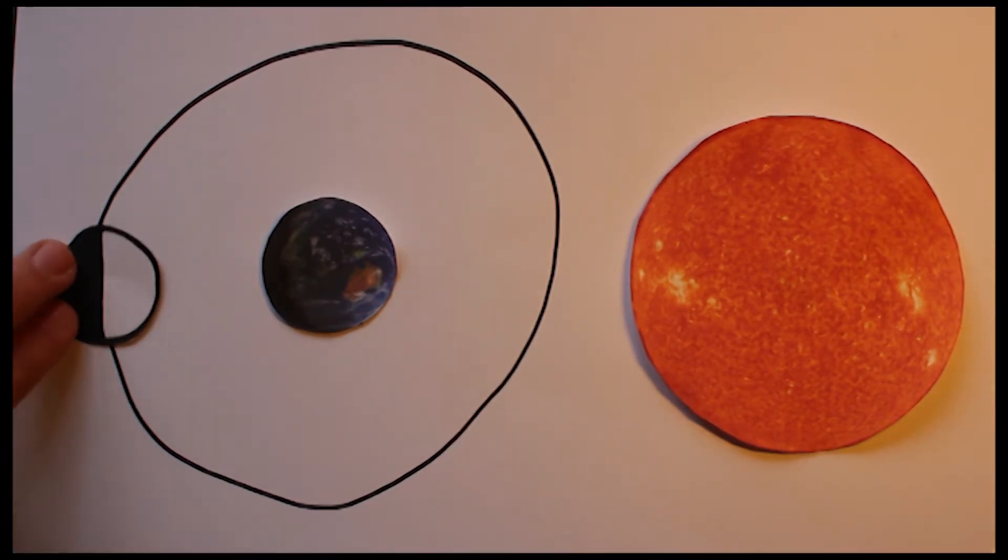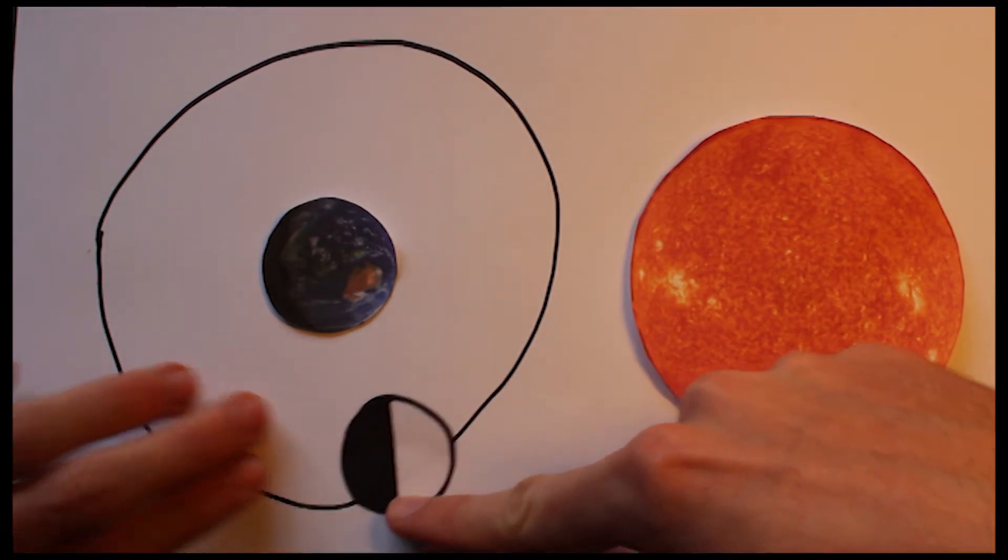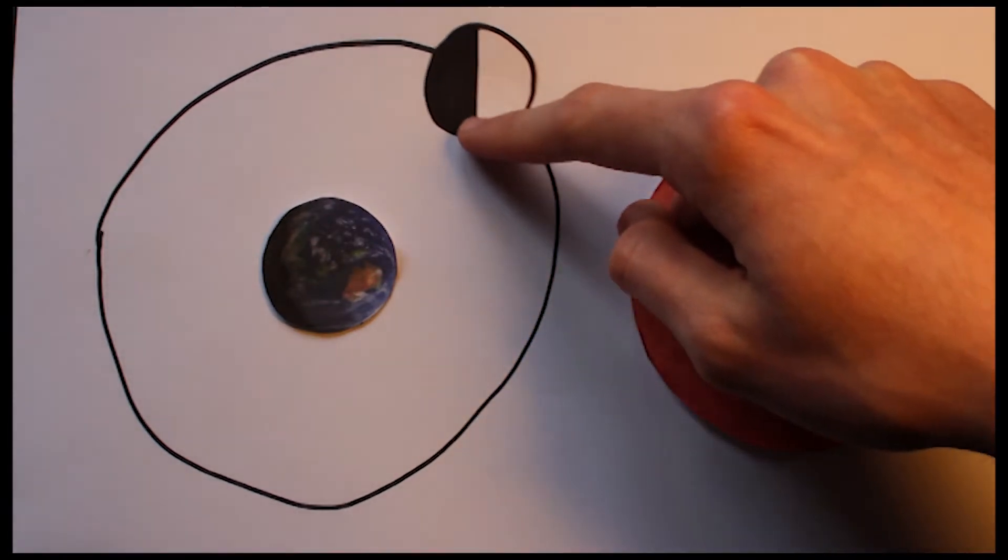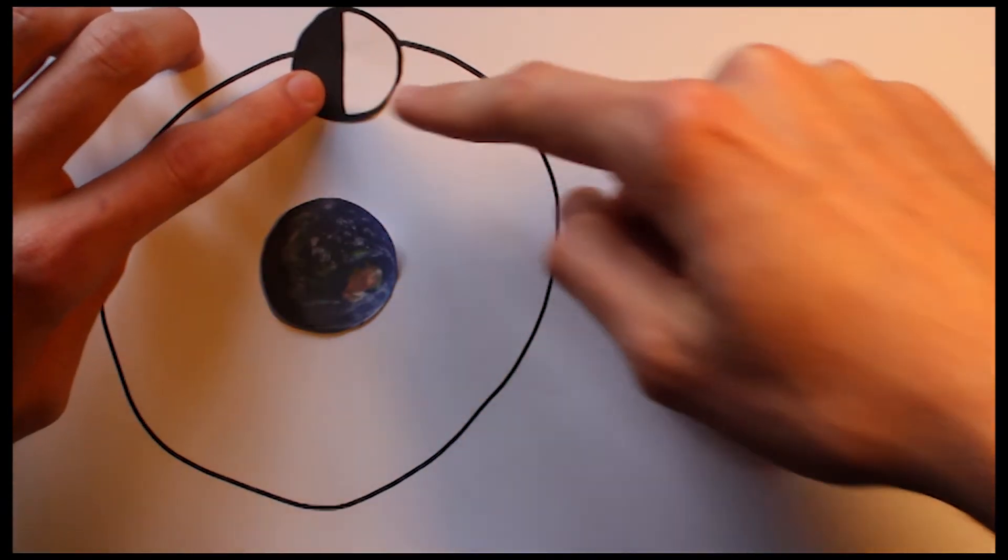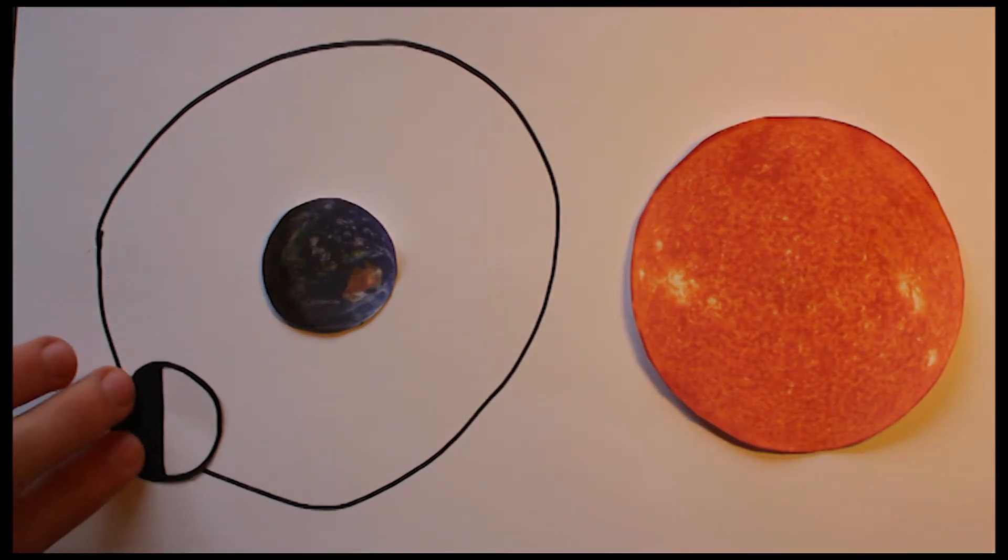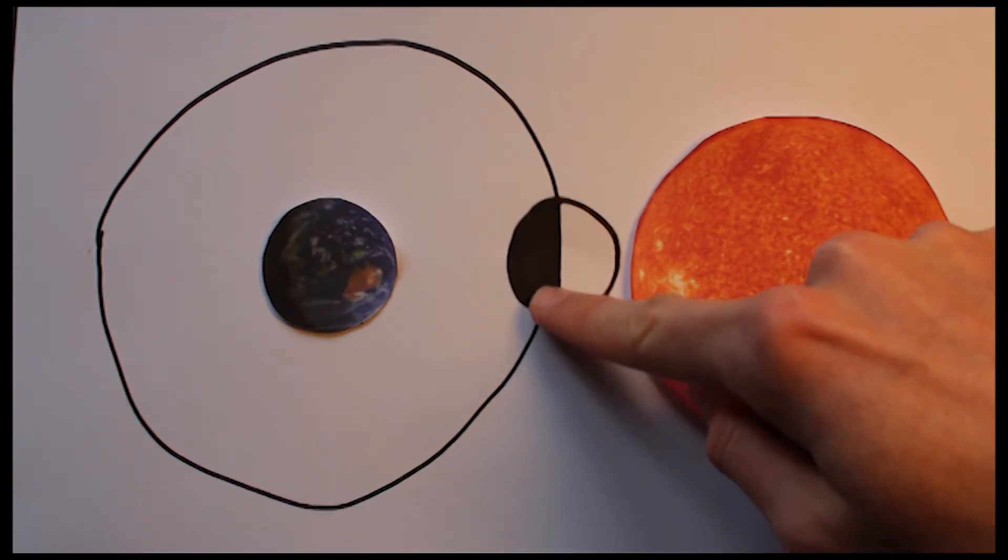Once you understand this, you can go further into understanding the phases of the Moon. The demonstration now illustrates the illumination of the Moon from the Sun. When it orbits around the Earth, half of the Moon is always illuminated by the Sun. This side is represented by the white side of the Moon.